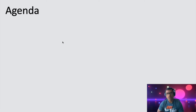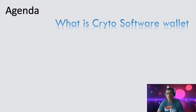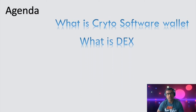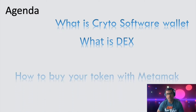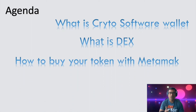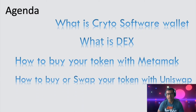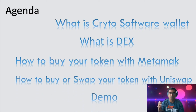What is in our agenda today? We have: what is a crypto software wallet — we will talk about software wallets — then we will talk about DEX, decentralized exchange, and then I will show you how to buy your tokens using the software wallet called MetaMask and how to buy or swap your token with Uniswap.